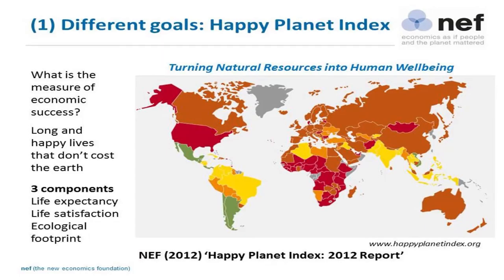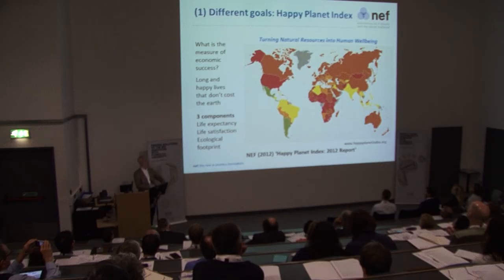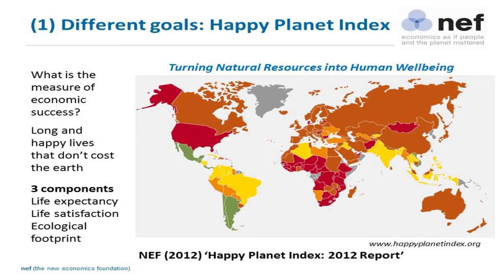One way of conceptualizing the socioeconomic efficiency of a system is: how good is it at turning planetary resources into human well-being? The Happy Planet Index measures that as a simple efficiency index — it doesn't tell you the happiest place in the world to live; it's an efficiency index. Countries flashing up red include the United States and most of sub-Saharan Africa, for two completely different reasons. The economies in sub-Saharan Africa do not support a high enough level of material consumption.